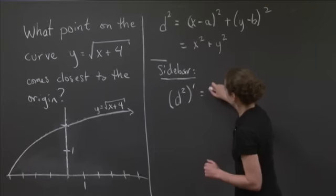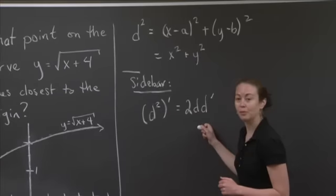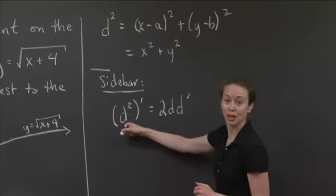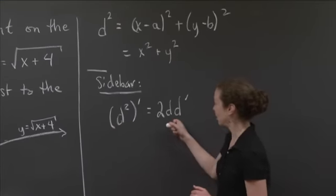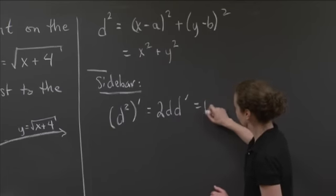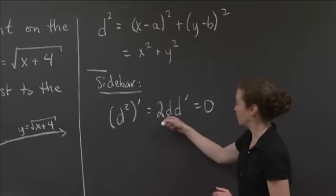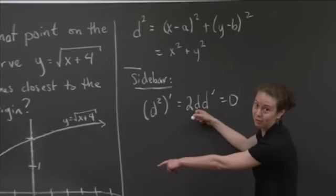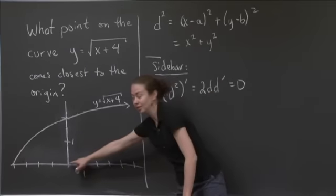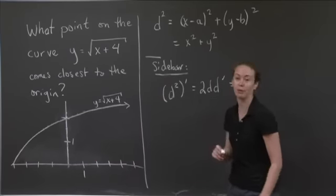Notice d squared prime is equal to 2 d d prime. Where did that come from? This is implicit differentiation with respect to x, and this is the chain rule. So if I want d prime to equal 0, I can also find where d squared prime equals 0. I'm assuming the distance is never at the origin, so distance is never 0, so I don't have to worry about that. That's a small sidebar, just to justify why we can do that.